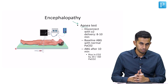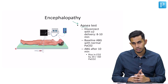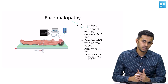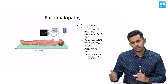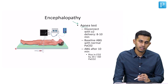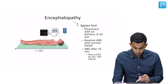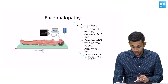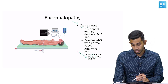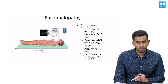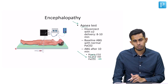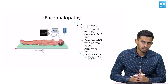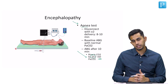After 8 to 10 minutes, if there is no breathing response and no motor movement, we draw another arterial blood gas. The apnea test is positive when there is a rise in PaCO2 of 20 or more from the baseline ABG, or if PaCO2 is more than 60 millimetres of mercury. We then reconnect the patient to the ventilator and discuss with the relatives regarding the feasibility of organ donation.